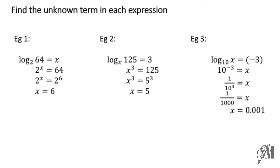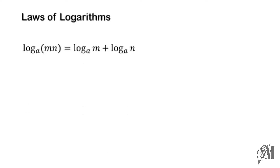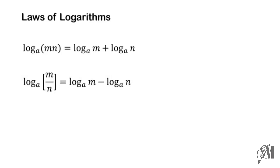Now let us see the laws of logarithms. The first law states that log base a of (m×n) — a product — can be written as the sum of the two logarithmic terms: log base a of m plus log base a of n. The second law states that a quotient can be written as a subtraction: log base a of (m/n) equals log base a of m minus log base a of n. Always write the numerator term first, otherwise your answer will be wrong.